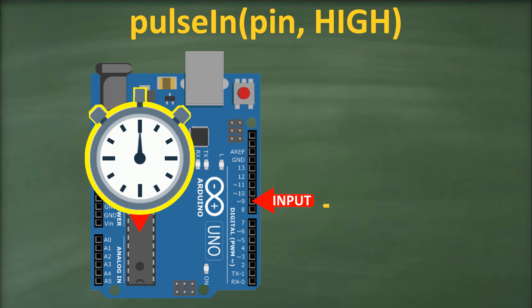For example, if the type is high, pulseIn waits for the pin to go high, starts timing, waits for the pin to go low, and then stops timing. It returns the length of the pulse in microseconds, or zero if no complete pulse was received within the timeout, which is around 3 seconds.